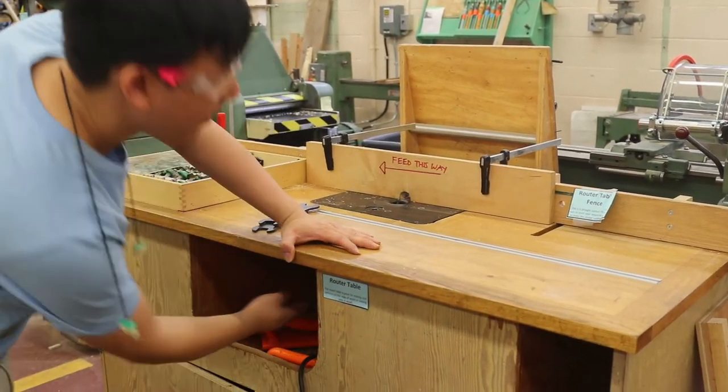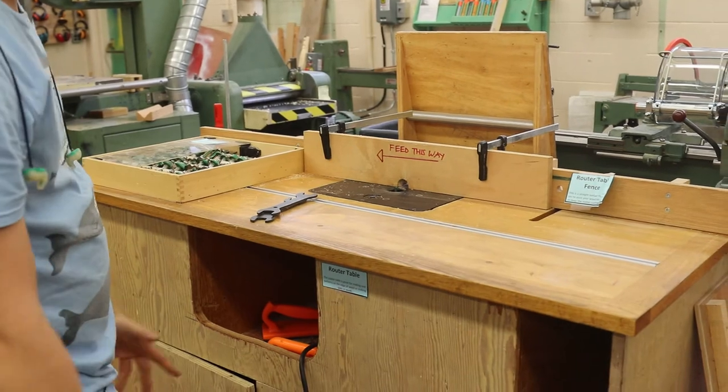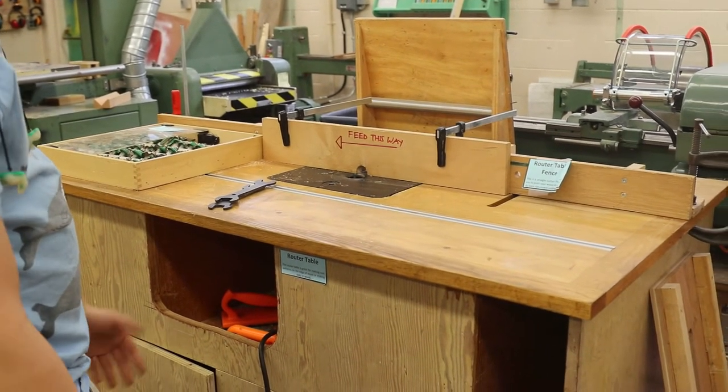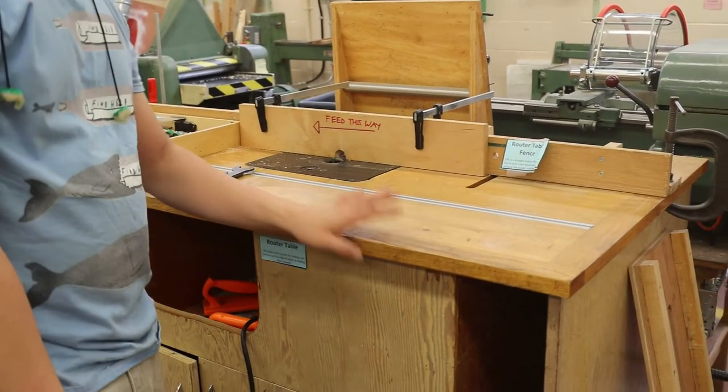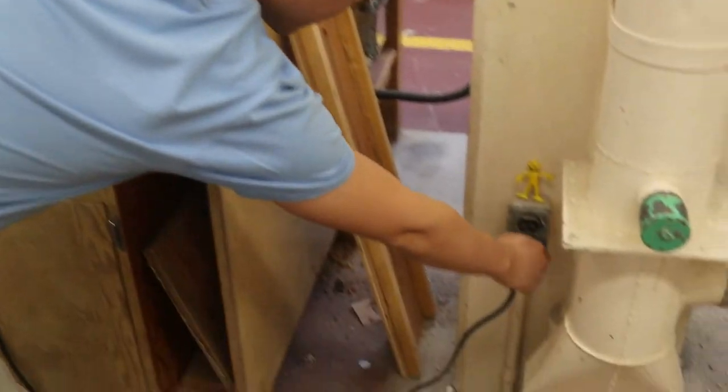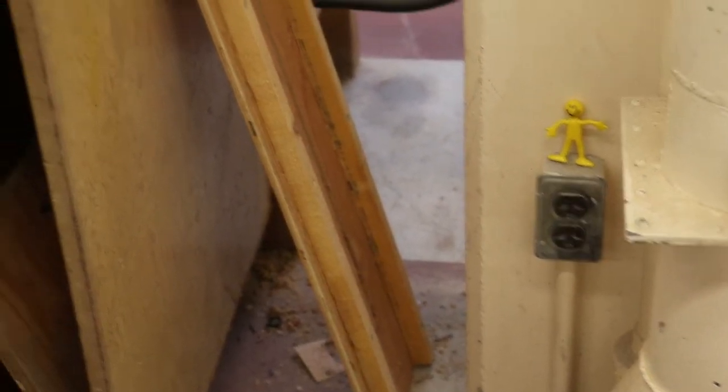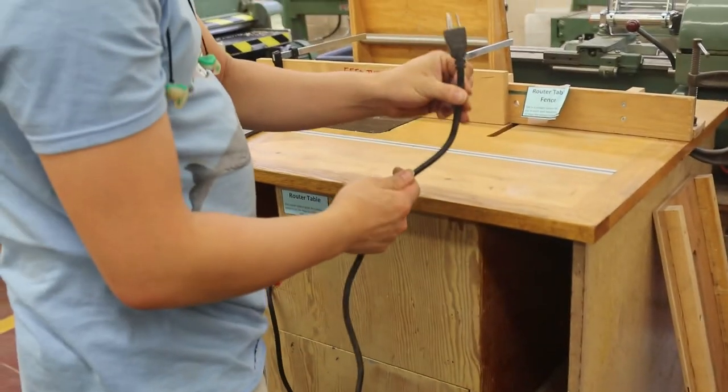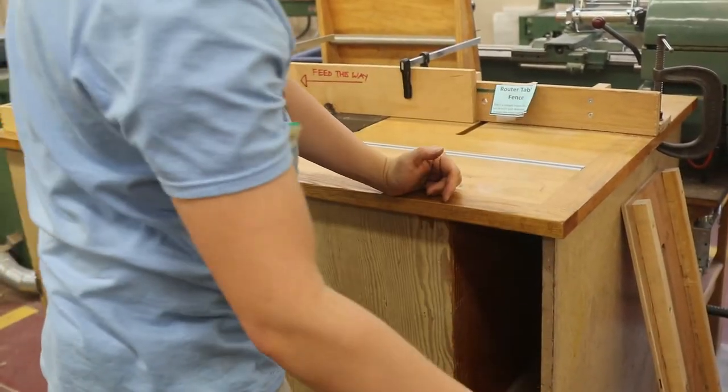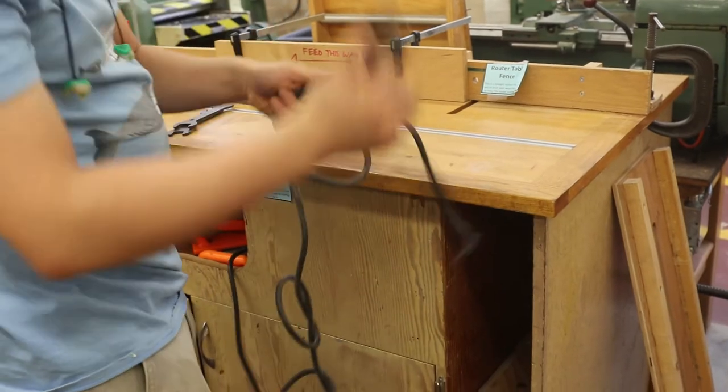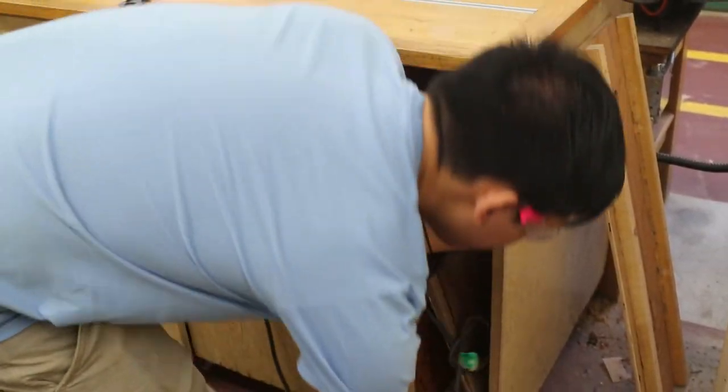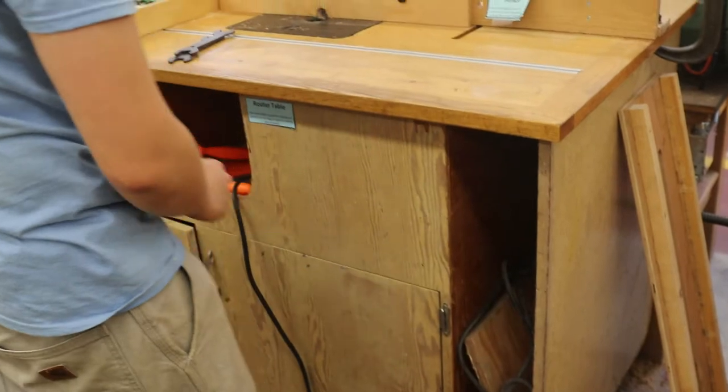Your router is actually underneath here and the very first step and probably the most important is to unplug the router table. So you're going to find the plug. Here it is. You're going to pull it out and it's actually really important just to make sure you have an eye on it at all times just in case one of your friends sees it and goes, I'll plug it in for you. That would end not well. So I'm just going to hide that in here so that no one is going to plug it in for me.